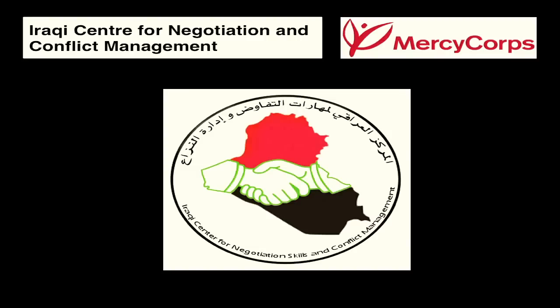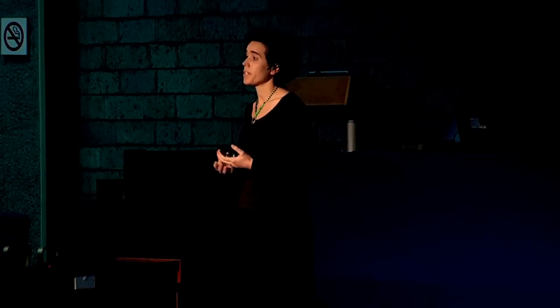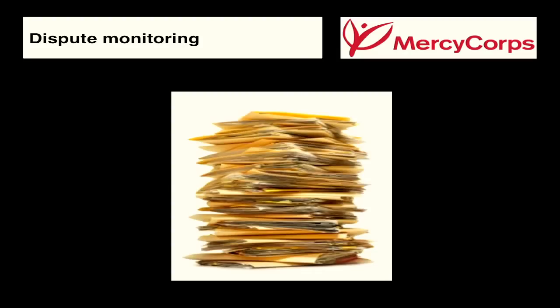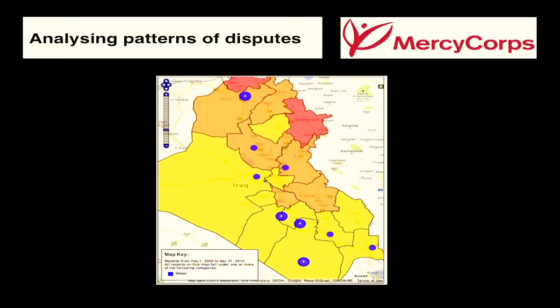The first of these programs is for the Iraqi Center for Negotiation and Conflict Management, which is a team of mediators that intervene in local disputes in Iraq and which Mercy Corps has been supporting. This network of mediators had been collecting a lot of data on the disputes they were intervening in, but it was all on paper in their offices. It was very difficult for them to see any patterns or trends in the disputes and to learn from them. So what we did is we digitized that data in order to give them an idea of some of the trends in their own data.